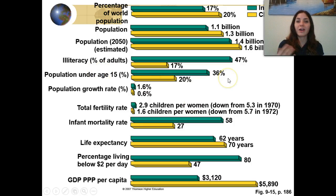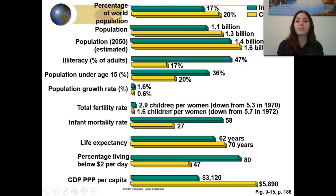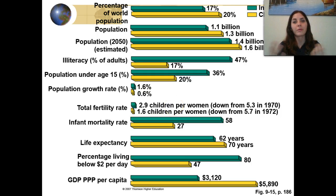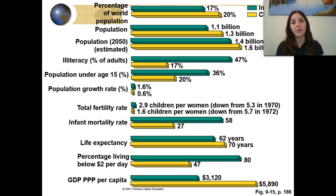The population under the age of 15 in India is pretty large — 36% of their population is under 15. China has about 20% of their population under the age of 15. India's fertility rate is 2.9 children per woman, meaning the population is still growing — a net gain of almost one child per couple. China has a 1.6 fertility rate, which means population should actually be decreasing, since there aren't enough children to replace the two parents who created them.